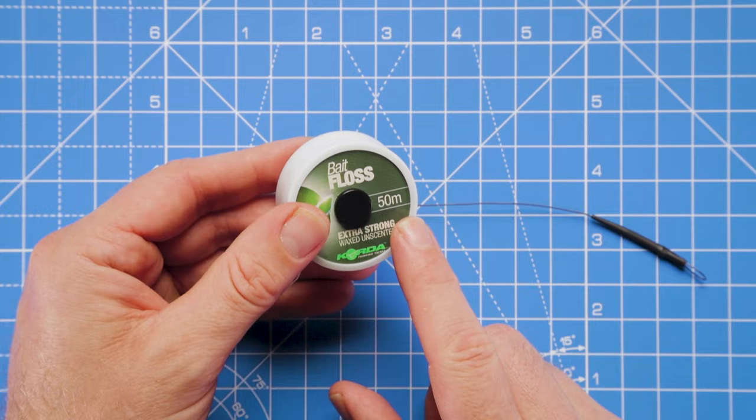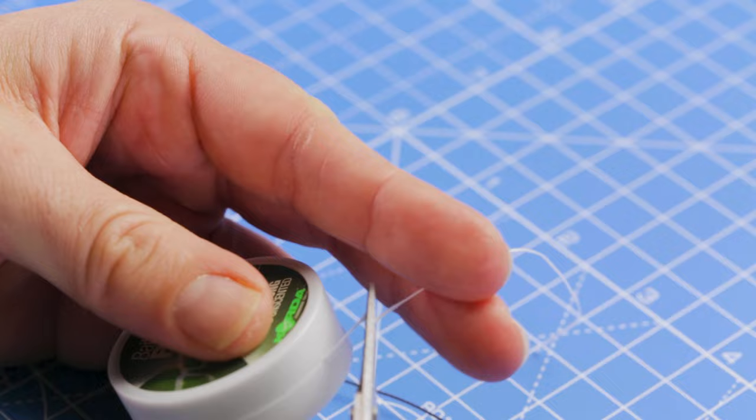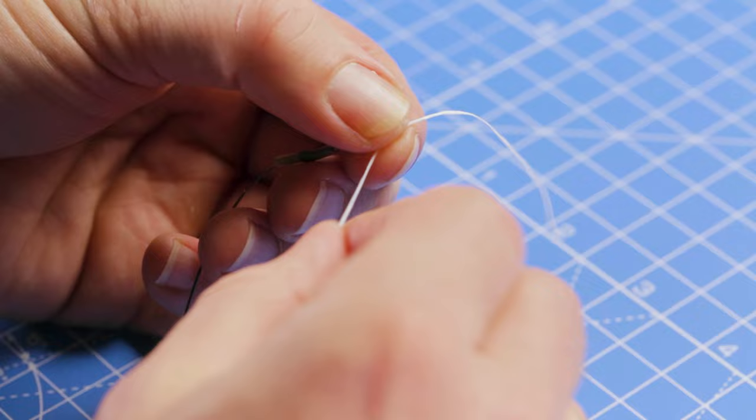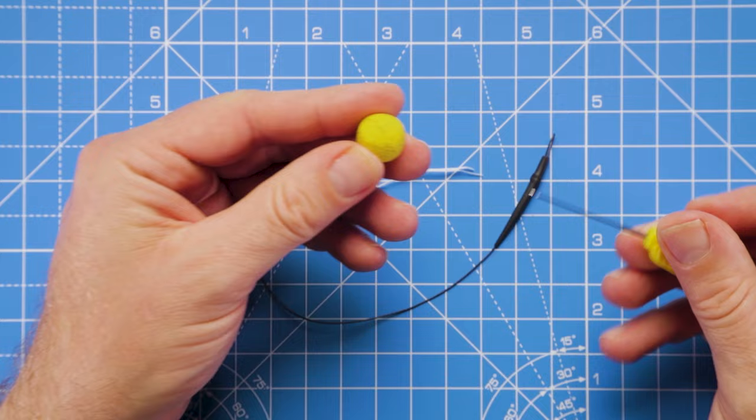Okay, now we can attach our hook bait. So we're going to take our dental floss, just going to pull off four or five inches of the floss there, just trim that away, and take the rig, find that micro swivel on the D section, just thread that floss through so we've got two little tag ends in the same length. There we go. Now we can take one of our balance wafters.